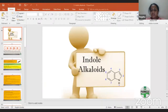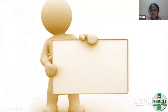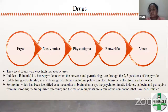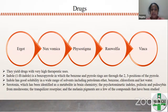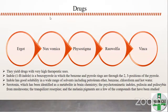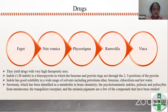In the case of indole alkaloids, it is important to understand the basic chemistry of the class and the basic principles behind those compounds. Under indole alkaloids we are going to study five different drugs: ergot, nux vomica, physostigma, rauwolfia, and vinca. These are drugs with very high therapeutic uses.